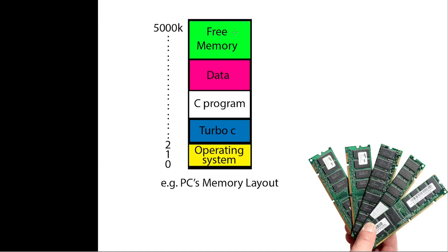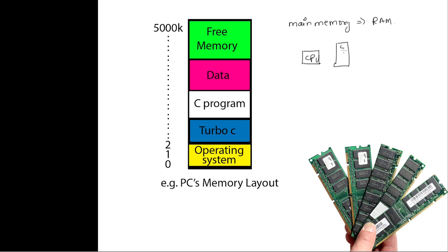Before knowing the pointer, we should know the structure of memory where pointers are stored and how they are used. When I talk about memory, I mean main memory — and main memory means RAM, because all intermediate data is stored in RAM. If you look at your computer hardware structure, there is the CPU, cache memory, main memory, and secondary memory.